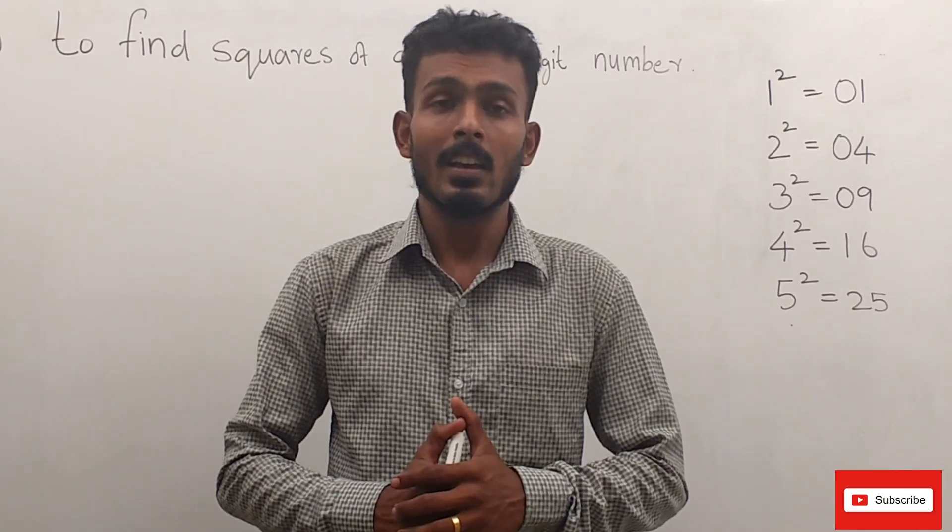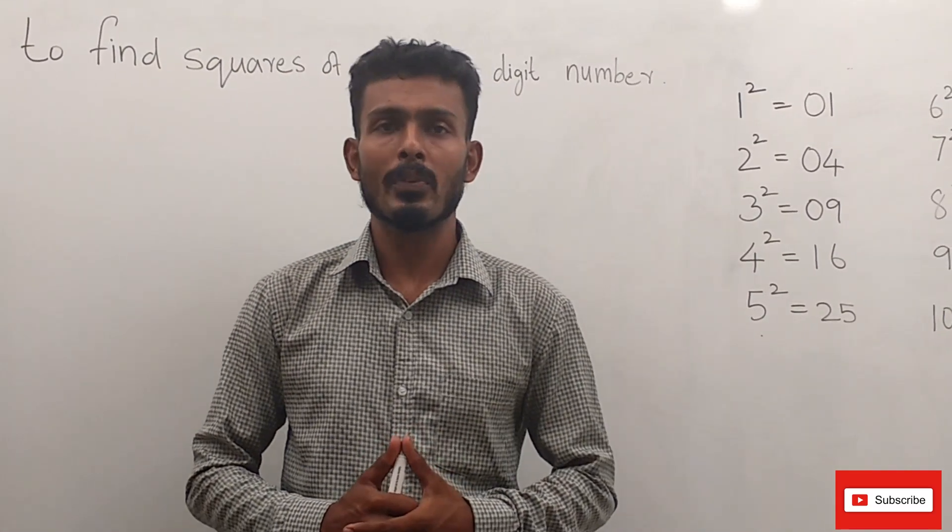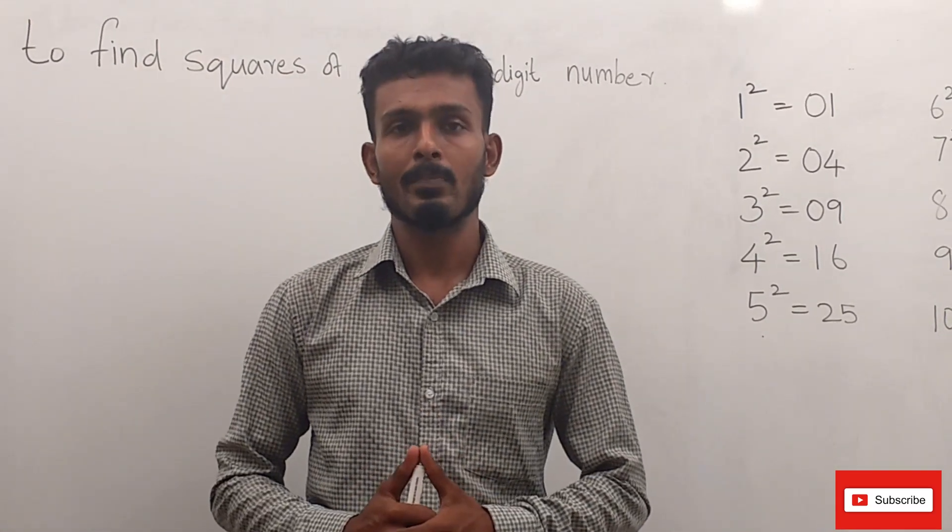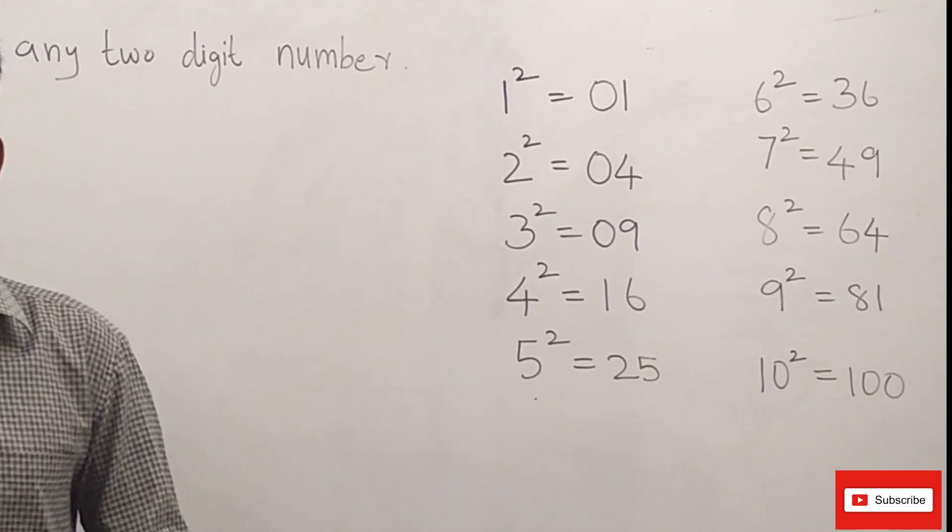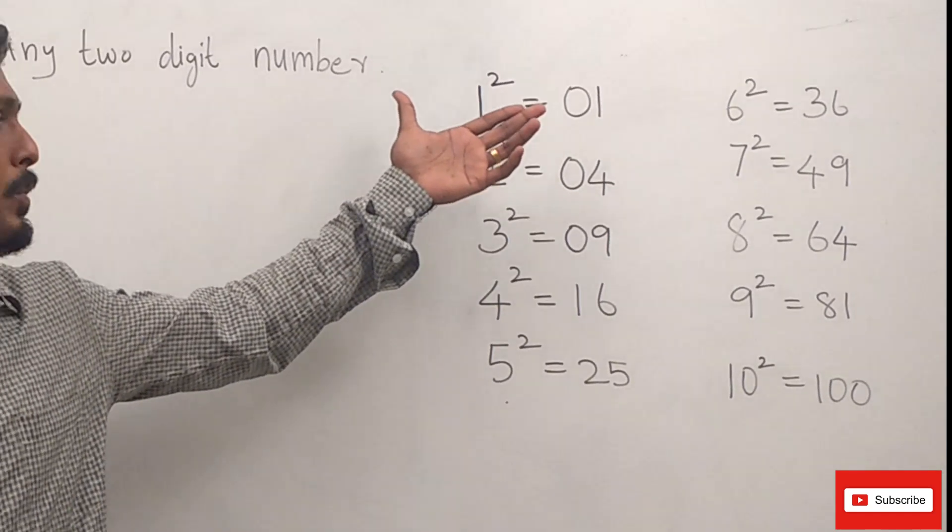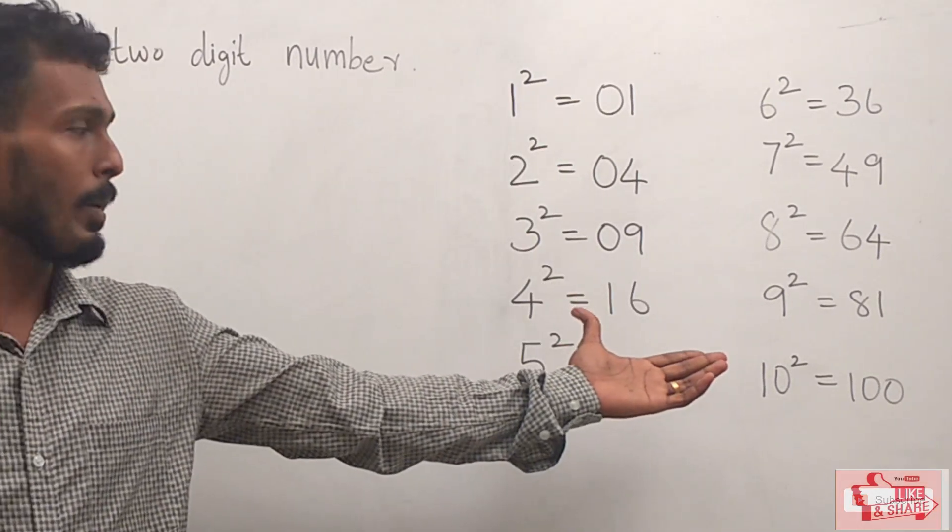That is, up to 99, we can find the square of any 2-digit number. The only thing that you must know is the square values of 1 to 9. I have written the square values of up to 10 on the board.